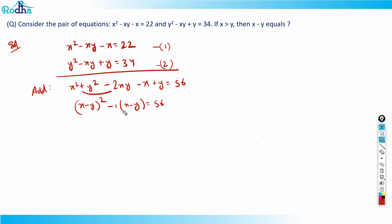I can simply put x - y as t. So what will happen? t² - t = 56. You can easily solve this quadratic: t² - t - 56 = 0.